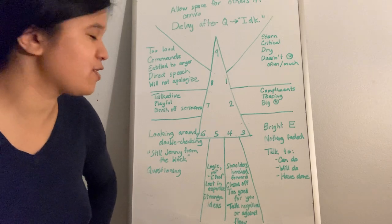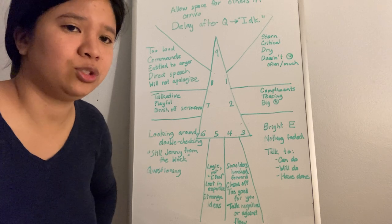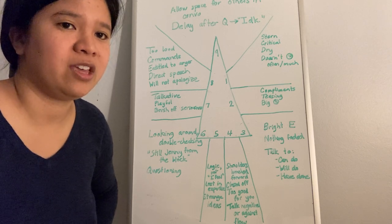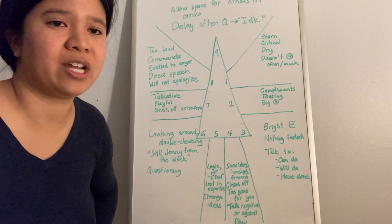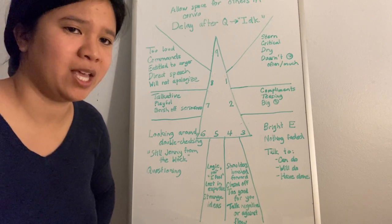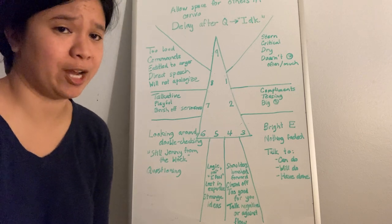There you have it. We have the signals of every type on the Enneagram. Not to be confused with if I look like this, then that's my type, but it is a factor in helping you consider your type, your wing, and your fix within your tri-type.